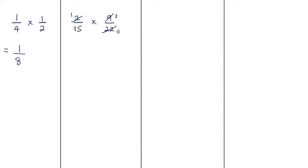So we're left with one over five times three over eleven. These values are a little bit easier to work with: one times three is three, and five times eleven is 55. Final answer: three over 55.